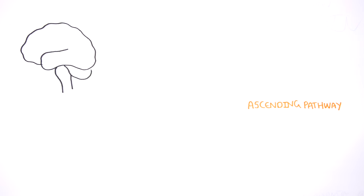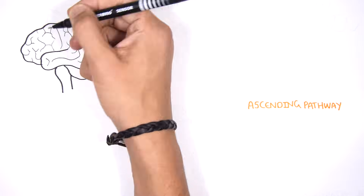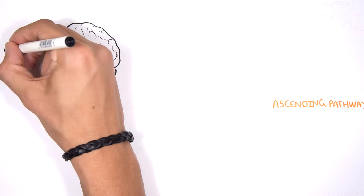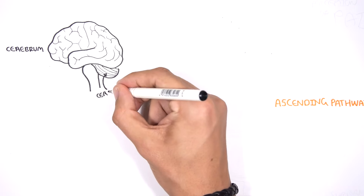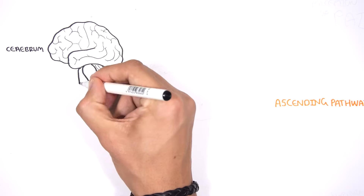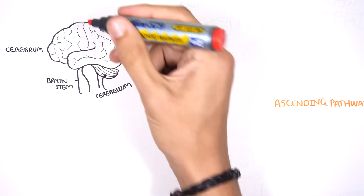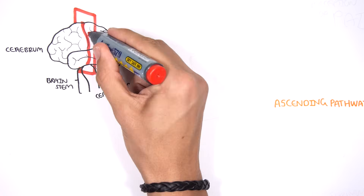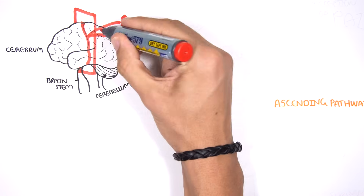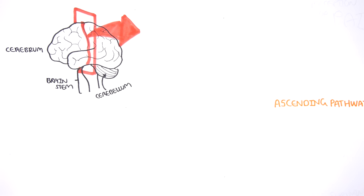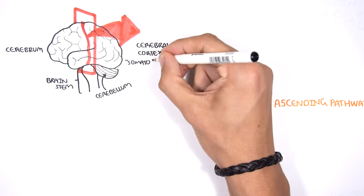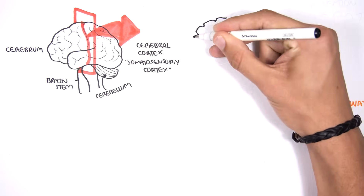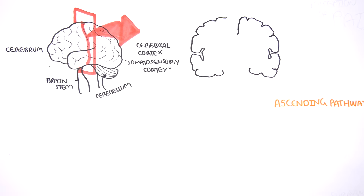Injuries to our body are felt in certain areas of our brain called the somatosensory cortex. Let's recap the brain briefly. Here is the cerebrum, brainstem, and cerebellum. The somatosensory cortex sits posterior to the central sulcus. Let's get a cross section of the brain and zoom into the somatosensory cortex. The somatosensory cortex is an area where sensation is perceived, including pain.